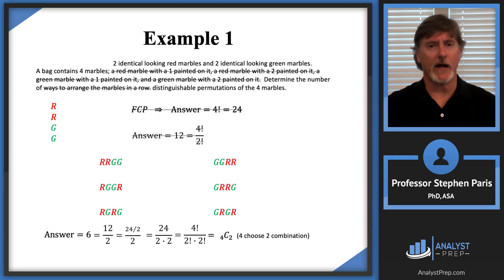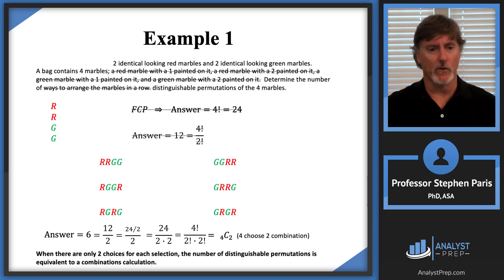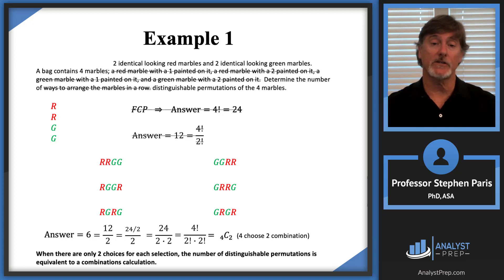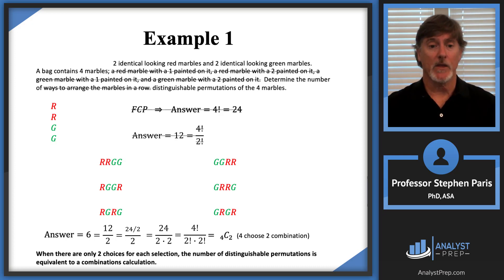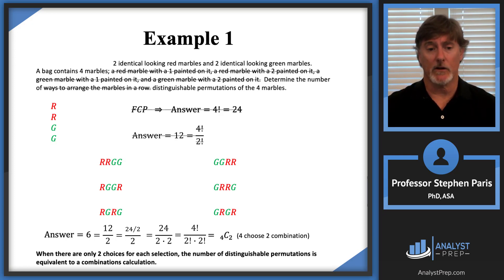When you only have two choices for each selection — in this case, each selection was either a red marble or a green marble — then the number of distinguishable permutations is equivalent to just calculating the number of combinations. So it's just a combination calculation.